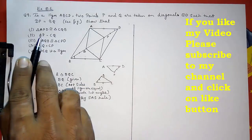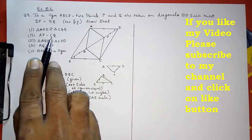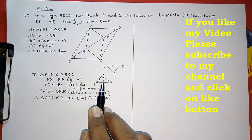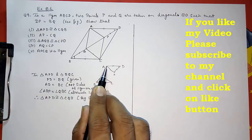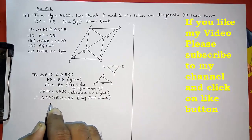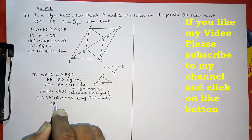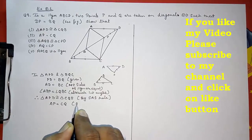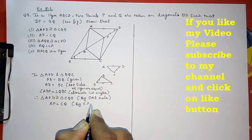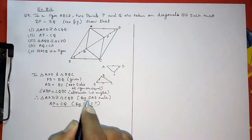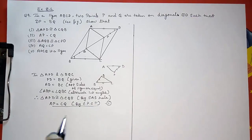That is our first answer. Then they said prove AP is equal to CQ. Since we proved these two triangles congruent, we can directly say AP is equal to CQ by CPCT. Take this as Result Number 1.